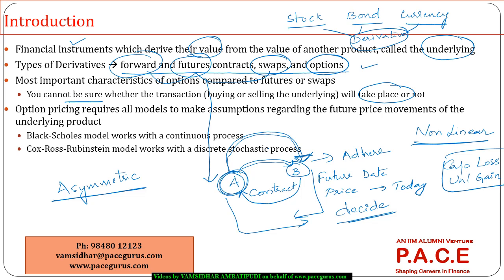That extra payment made by party A to party B is primarily for B giving A the extra facility to decide whether to go ahead with the contract or let it expire. B is obligated, whereas B gives an option to A by taking a premium at the beginning. Whatever amount A pays to B to get that additional option is what we call the option price or option premium — the amount one party pays to the other at the beginning of the contract to secure the right to decide later.